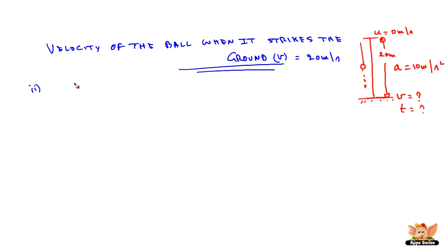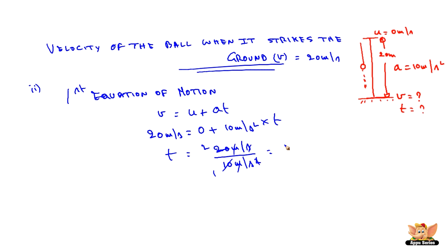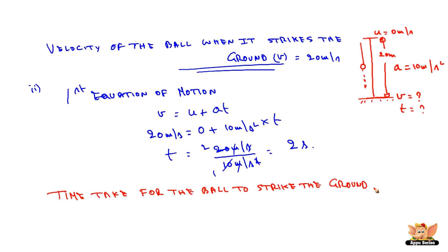Now the second part of the problem is the time that it takes. The first equation of motion states v is equal to u plus at. We know v as 20 meters per second, u is 0, and a is 10 meters per second squared, and t is unknown. Hence t is equal to 20 meters per second divided by 10 meters per second squared, which gives t equal to 2 seconds. So the time taken for the ball to strike the ground is 2 seconds.